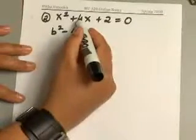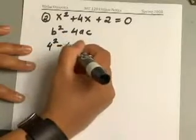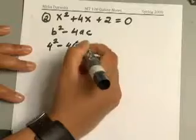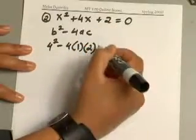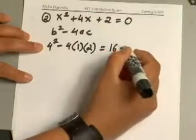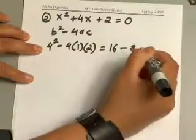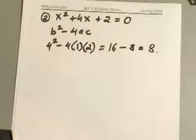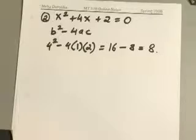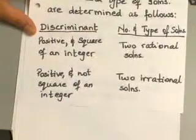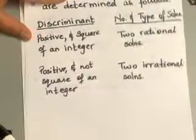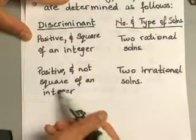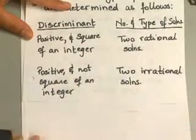So b² - 4ac: b² = 4², minus 4 times a, where a = 1, and c is the constant 2. So 4² gives us 16, minus 4 × 1 × 2 = 8. 16 - 8 gives us 8. This is a positive number. Now, is 8 the square of an integer? No, 8 is not a perfect square. So when you have a positive discriminant that is not the square of an integer, you end up with two irrational solutions.